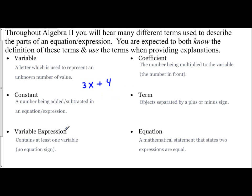A variable expression contains at least one variable. An expression has no equal sign, there's no equation. An equation is if you have two mathematical statements that are equal to each other, so it's two expressions equal. An equation would be if I said 3x plus 4 equals 9. Now we have an equation because there's an equal sign.